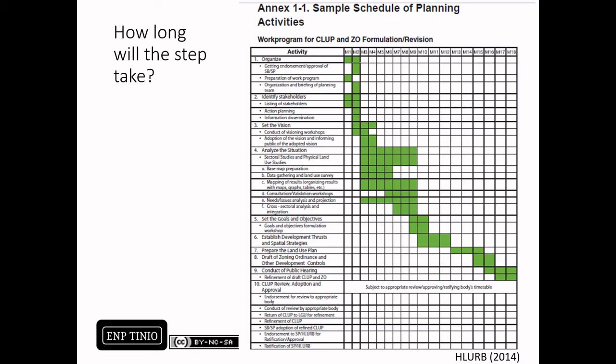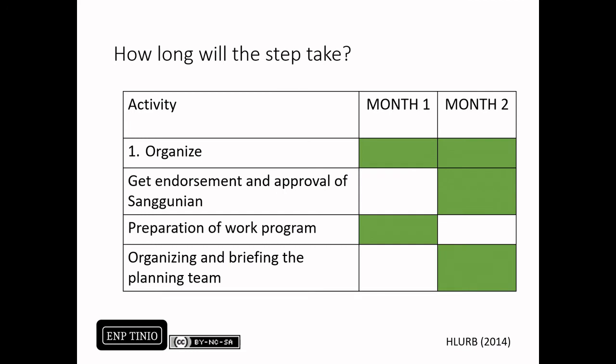How long will step one take? The sample schedule of planning activities prescribed by the HLURB shows that step one covers 2 months. Important in these 2 months is: first, to get the endorsement and approval of the local Sanggunian towards the proposal for the land use planning process, the preparation of the work program, and the organization and briefing of the planning team. One hindrance identified in a PIDS study in 2020 is that some members of the planning team are not that knowledgeable — not in the planning process itself, but in the technical requirements of the different sectoral studies.